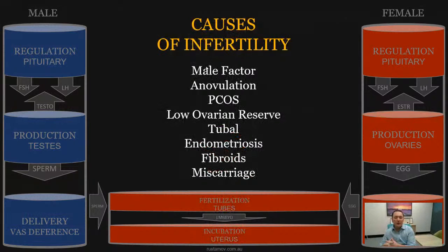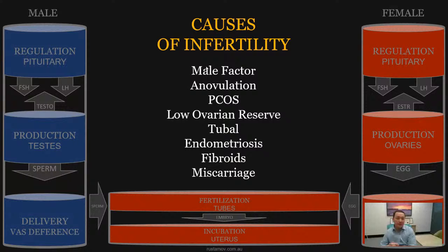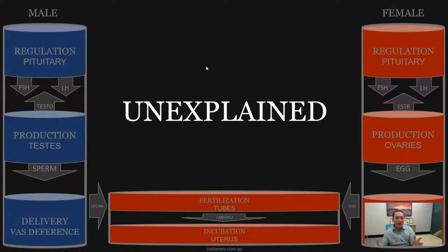These textbook causes of infertility can be fit into one of these boxes in the process of production of gametes, fertilization, or incubation. If we can't find the right box or identify the cause, we simply call it unexplained infertility.